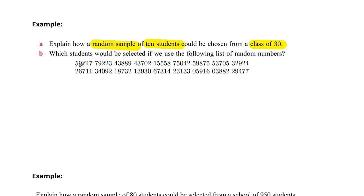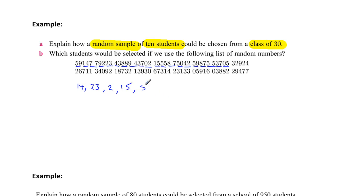There's 59 — can't use it because it's greater than 30. There's 14, so that would be our first one, number 14. We can't use 77, can't use 92. We can use 23, so number 23 would be next. Can't use 43, 88, 94, 37. But we can use 2 — and notice it's a two digit number but there's a zero in it, that's why it's a 2. We can use 52 and 15, so we've got 4 already. Then 55, 87, 50, 42, 59, 87, 55, 37, then 05 — so we can use 5 as our next one. You can continue doing this until you get your 10 class members selected. That's how you would use a random number list to help you choose the right people in the group.